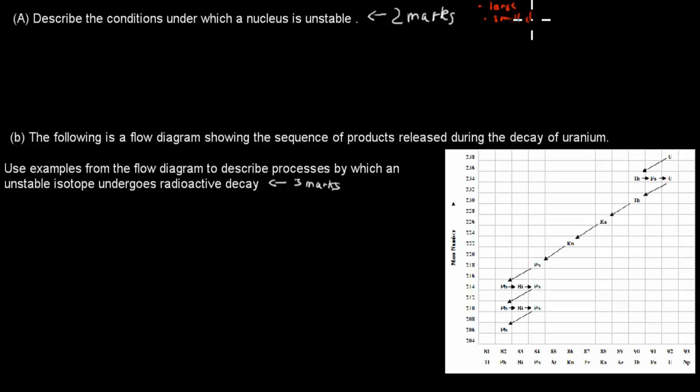For example, the ones which have an atomic number of less than 20 or greater than 20, and explain what kind of conditions, so describe the conditions that make this an unstable nucleus.